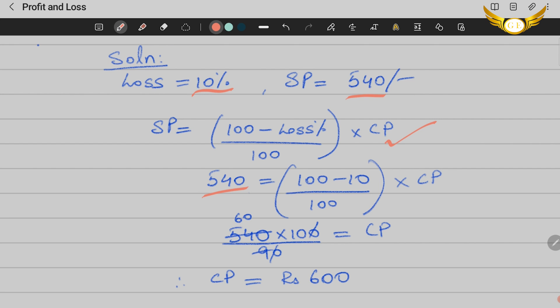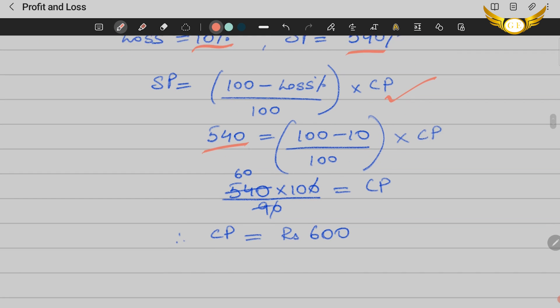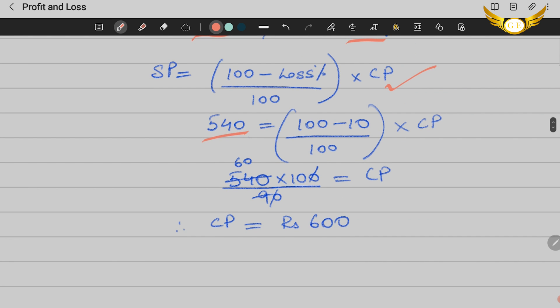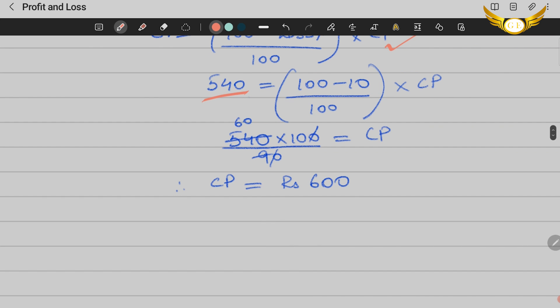We substitute the selling price 540 and loss: 100 minus 10 by 100 into CP. After cross multiplication and cancellations, we get the CP as rupees 600.